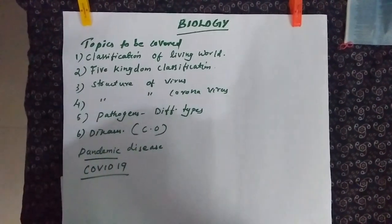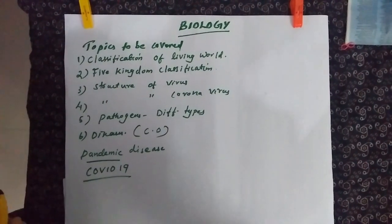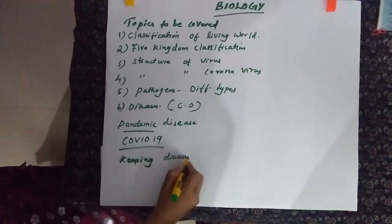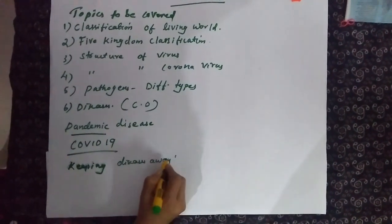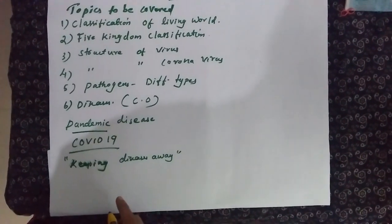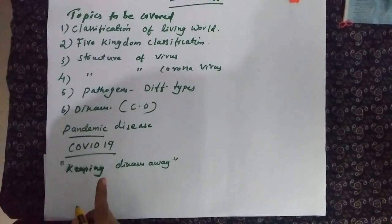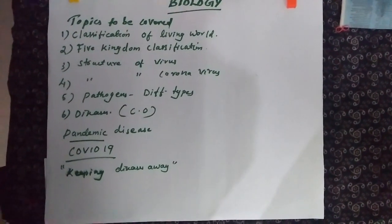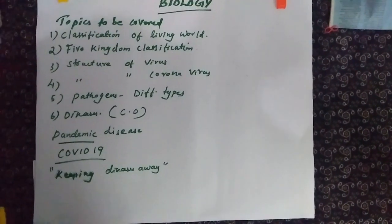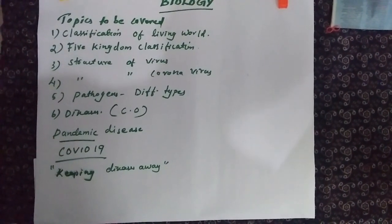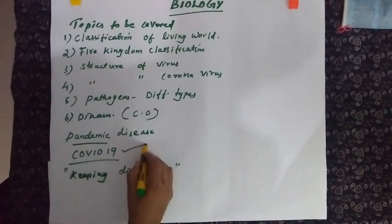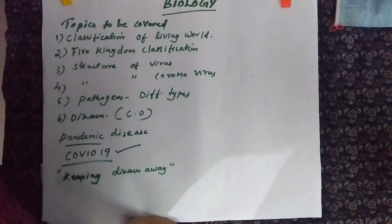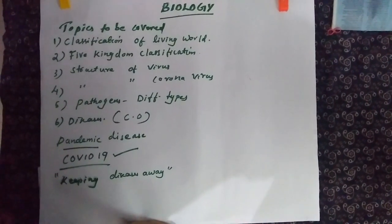Look, children — based on your syllabus, there is a chapter named 'Keeping Diseases Away.' I think it is the fourth chapter of the first part of your textbook. In this chapter, you have a detailed study of diseases, pathogens, disease-causing organisms, etc. Since virus is a pathogen, we should have an awareness about COVID-19. I wish to give you some important points about this pandemic disease and some general ideas regarding microbes or causative organisms.